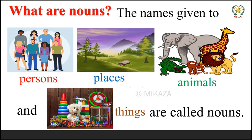Now, when you say places — names of places — you can have a lot of places. School is a place. Mountain is a place. Hospital is a place. Karpur is a place. Karachi is a place. So these are also called nouns.